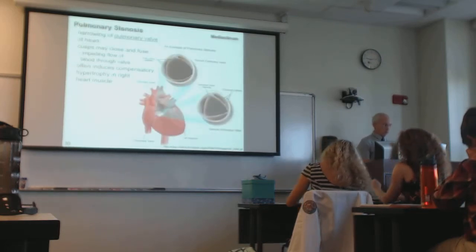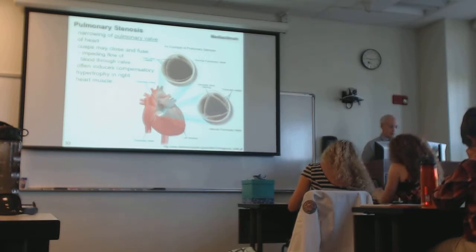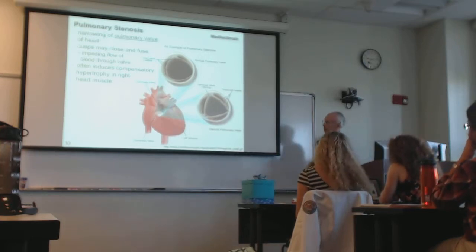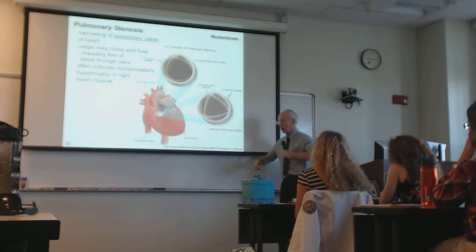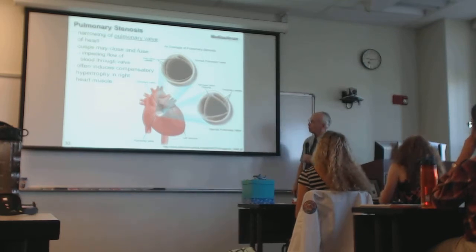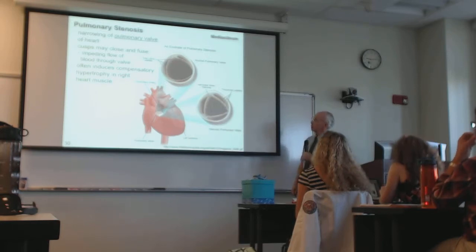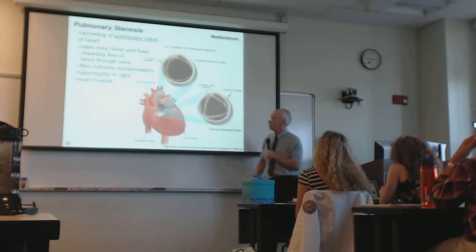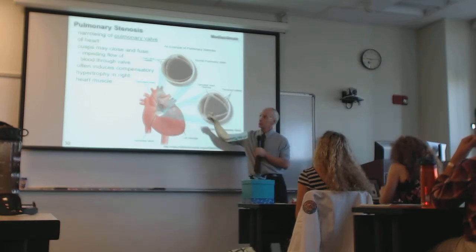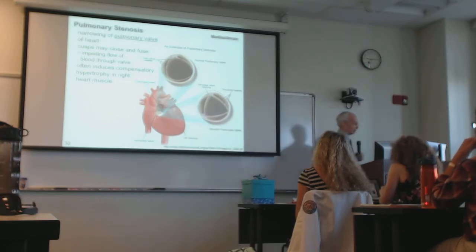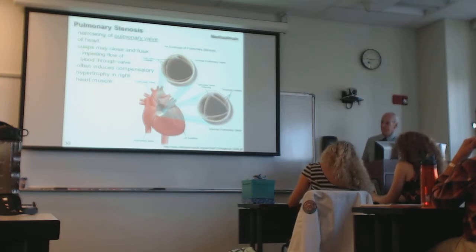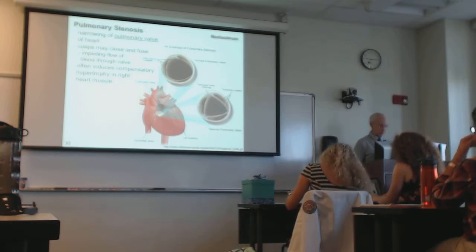An example is pulmonary stenosis — narrowing of the pulmonary valve. The right heart must pump more strenuously to force blood through the narrowed opening. As it does so, it tends to become hypertrophic — a pathological process in this case.